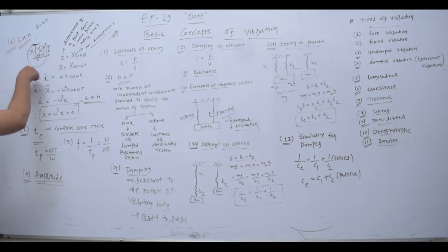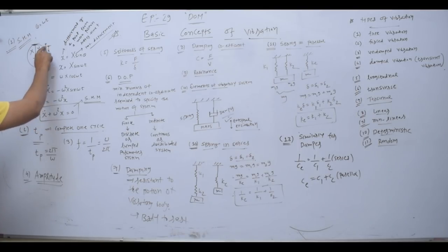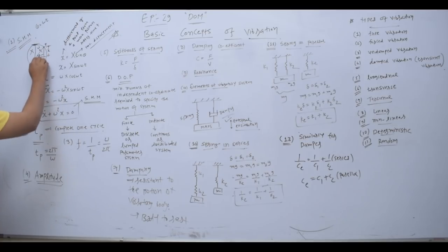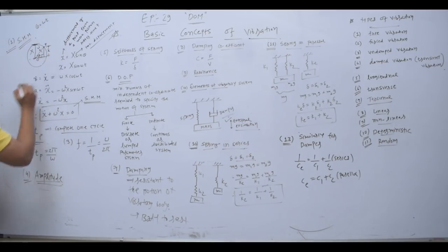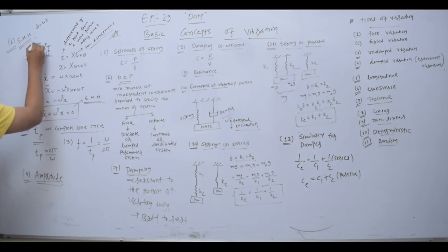Now let's look at the equation. Consider a particle in rotational motion. Here I have a center point, and the particle is at some distance from the center. After some time, the particle is at point P, creating an angle theta. This is the maximum displacement, and this is called the mean position.